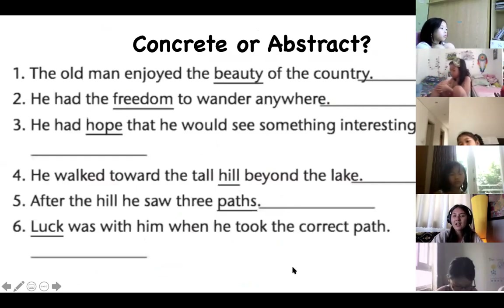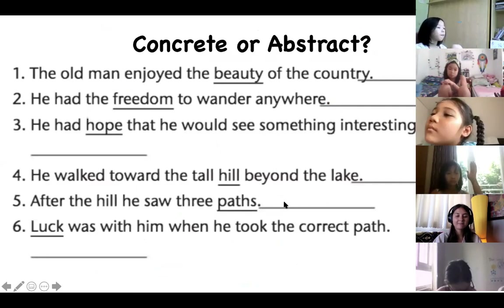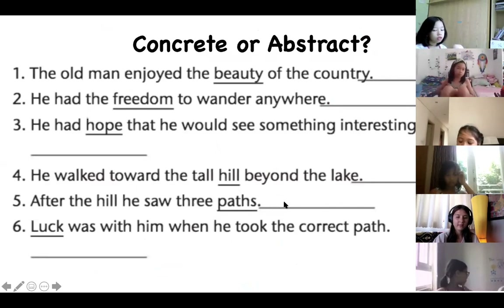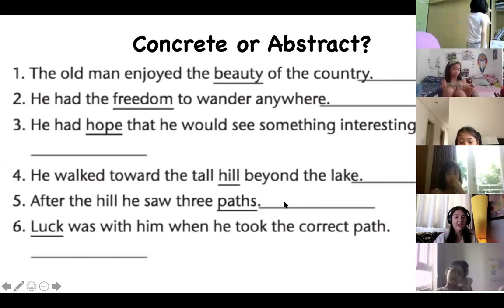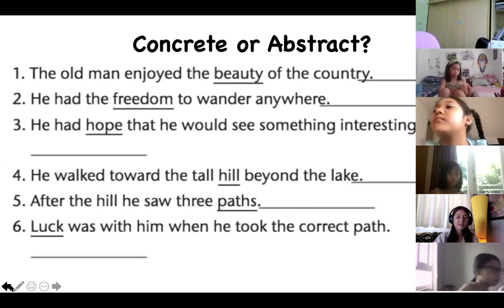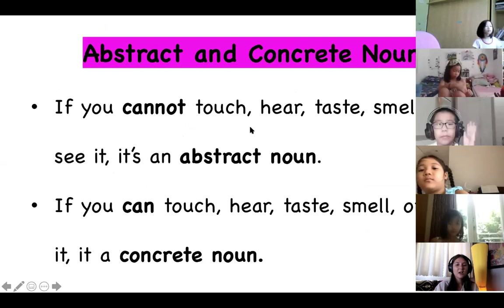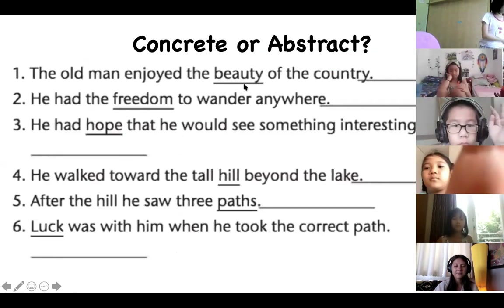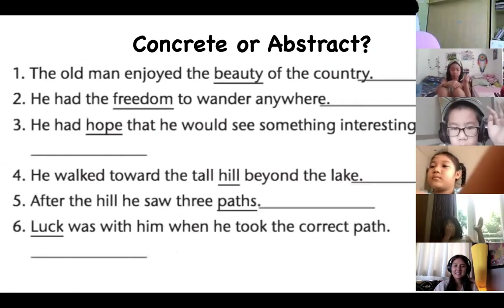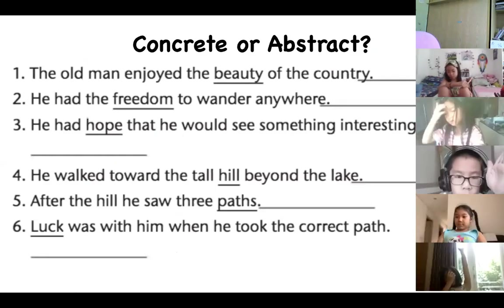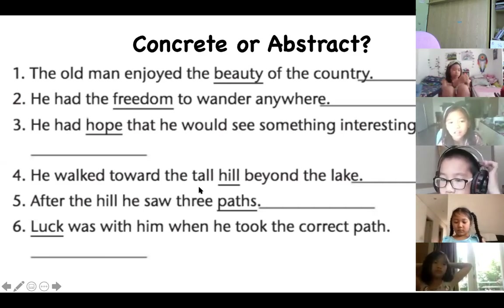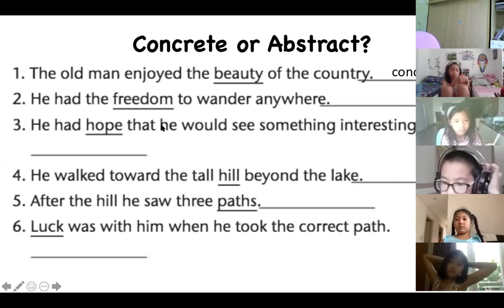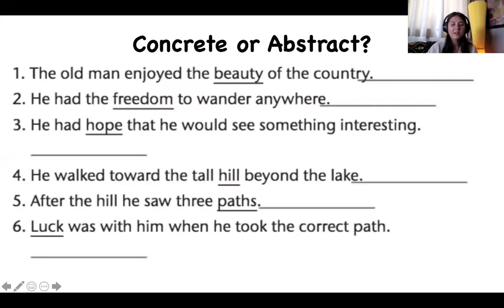Have a look at these sentences — is the underlined noun concrete or abstract? Number one, Ryan reads: 'The old man enjoyed the beauty of the country.' Have a look at the word beauty — it's underlined. Can we see, touch, hear, taste, and smell beauty? If we can touch, feel, smell, taste, and see it, it's concrete; if we cannot, it's abstract. Dami: I think it is abstract. Good job, Dami — beauty is abstract. We cannot taste it, smell it, touch it, or feel it.